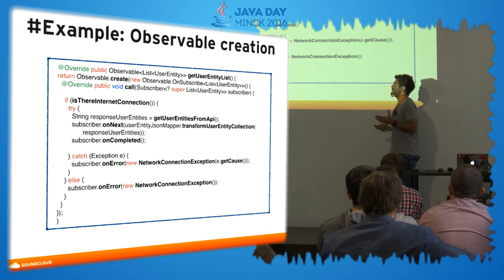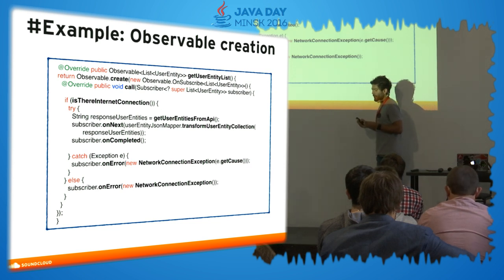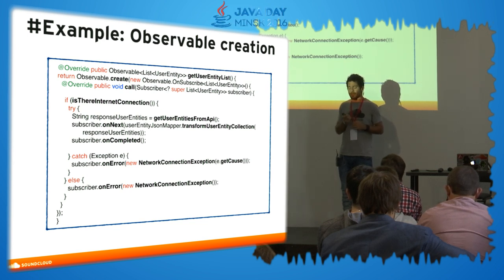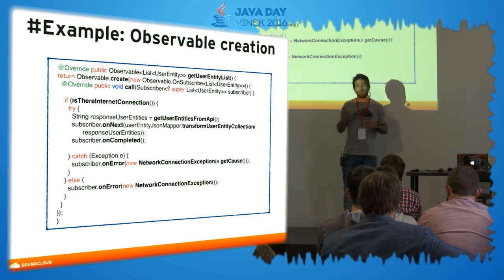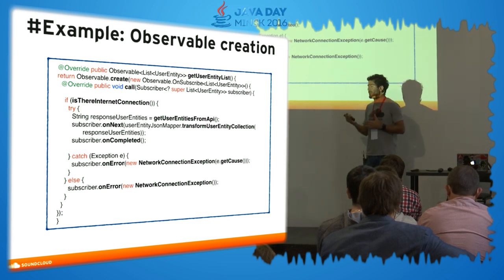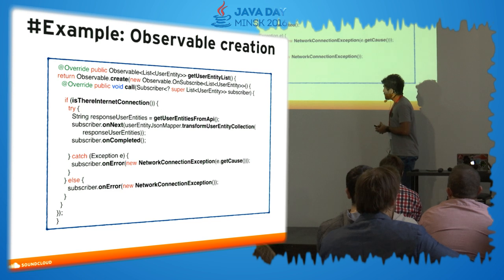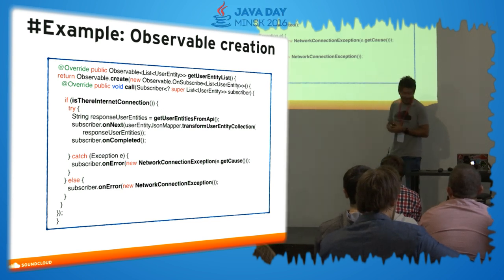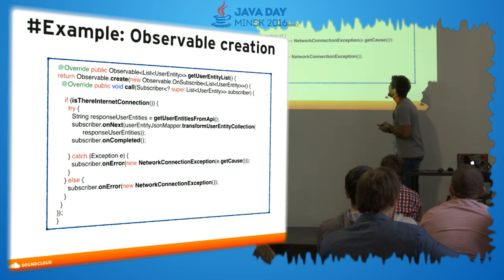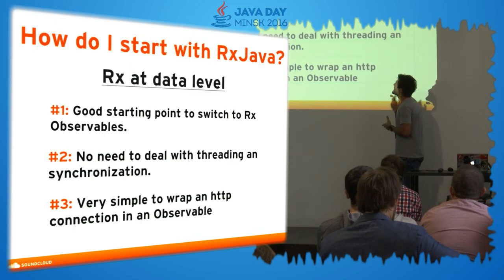There are third-party libraries for debugging. In my case I created one for Android called Frodo — from Lord of the Rings, I'm a huge fan. Through annotations you can see on the Android console what's going on: what items are being emitted and in which thread.